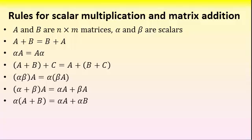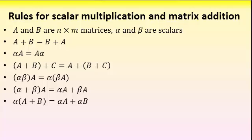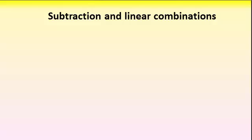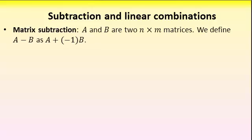Finally, let's look at subtraction and linear combinations of matrices. We can use the definitions that we have for addition and scalar multiplication by minus 1 to define subtraction, and we simply define A minus B as A plus minus 1 times B.